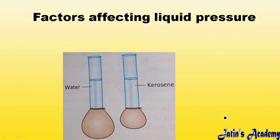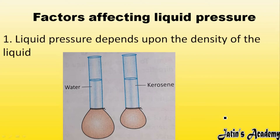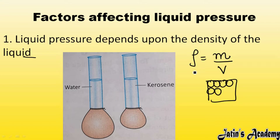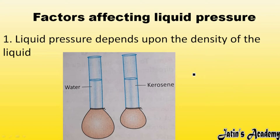Now we have the factors affecting liquid pressure. The first factor is the density of the liquid. Density is equal to mass per unit volume — meaning, in a given volume, how much matter is contained. That is known as its density.